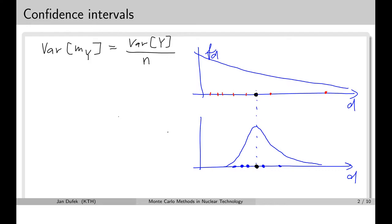We already know how to calculate the variance that characterizes this distribution. The variance of the mean value of our result is equal to the variance of the random variable divided by the number of samples. This means that the variance in the mean value of the calculated result decreases proportionally with the number of samples accumulated during the simulation. So if we collect 10 times more values, the variance in the mean value will decrease 10 times as well.